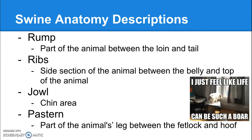Ribs are the same as in cows — the side section of the animal between the belly and the top. The jowl is the chin area, so kind of the jaw.